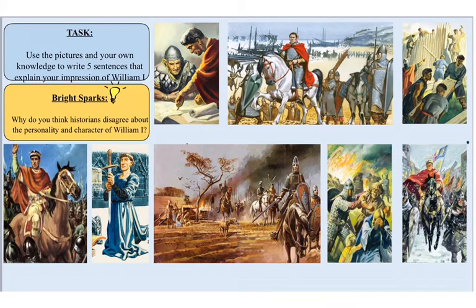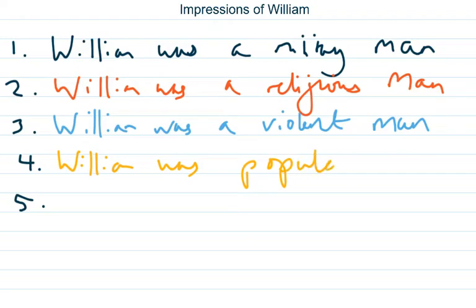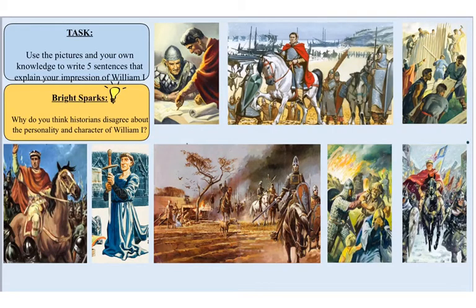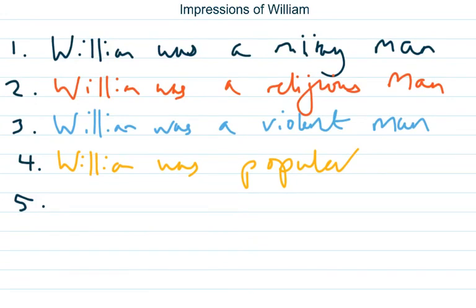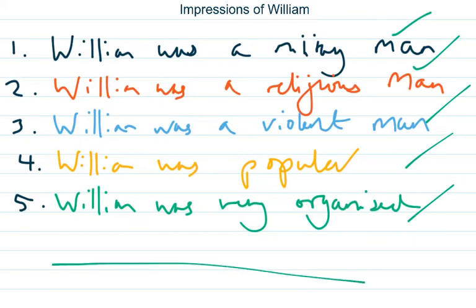What else can we see? Maybe if we look down here where there's men all surrounding him, we could say William was popular. And finally, looking at this one here, you could say William was very organised — and you'll see a lot of this through things like the Domesday Book, which we're going to come to in a couple of lessons' time. So there are five good ways you can describe William. If you've got any of mine, give it a green tick. Any I've got which you haven't got, add in green pen underneath your work.